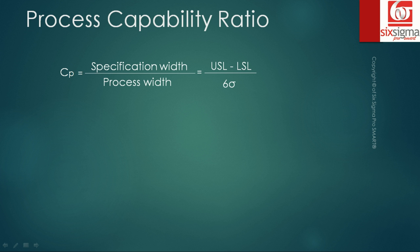Now let's understand the process capability ratio. A process capability ratio by definition is a ratio of a specification width which is provided by the customer divided by the process width which is our capability to deliver. It is nothing but the ratio of upper specification limit minus the lower specification limit divided by six sigma.